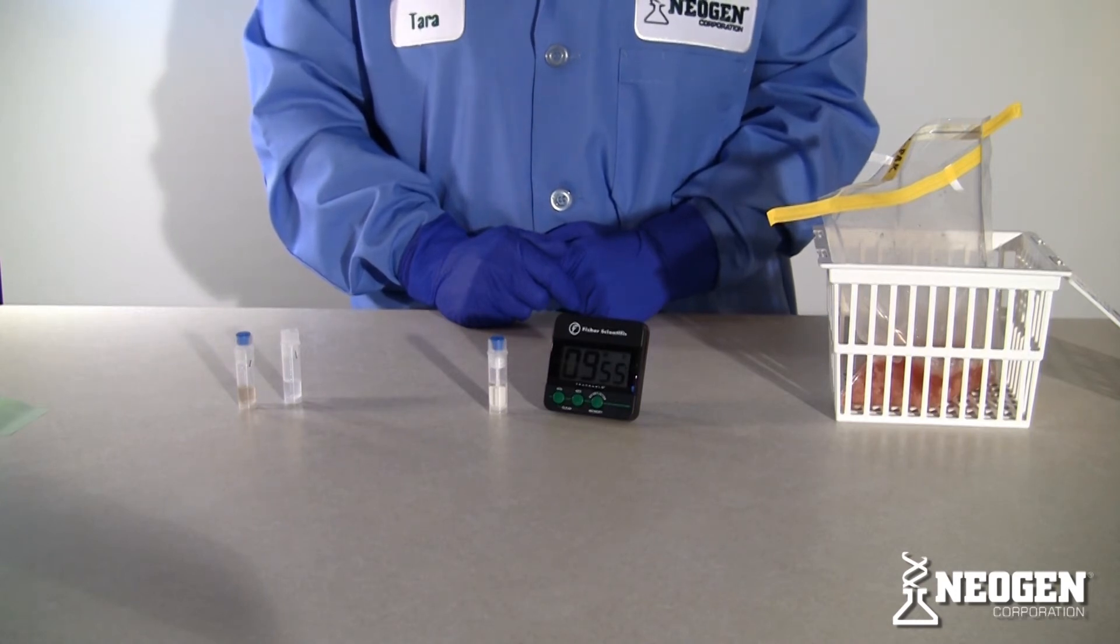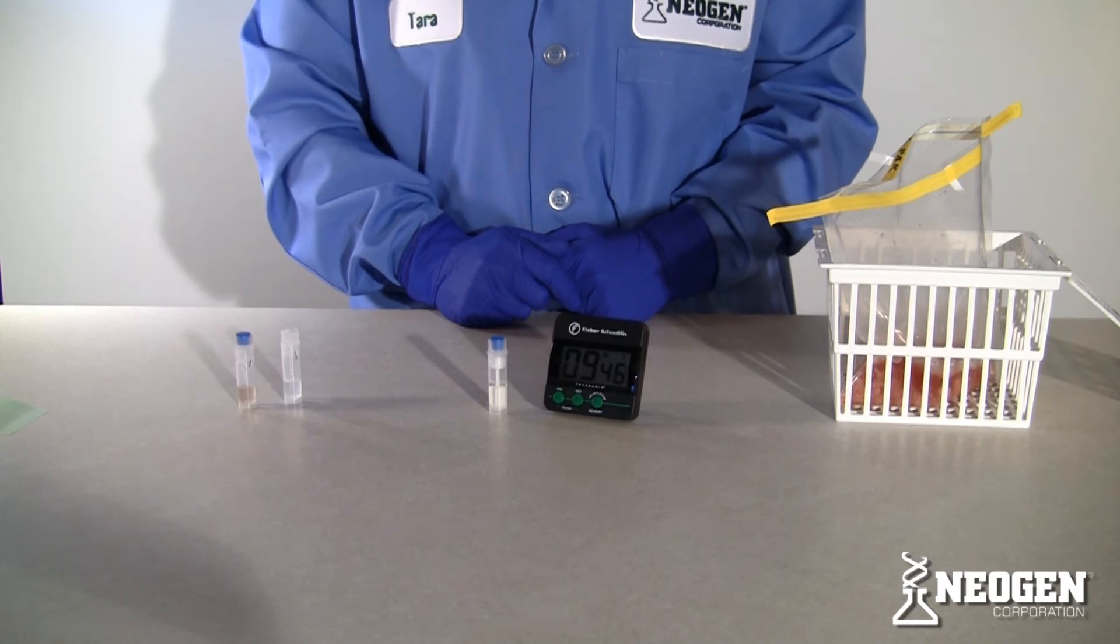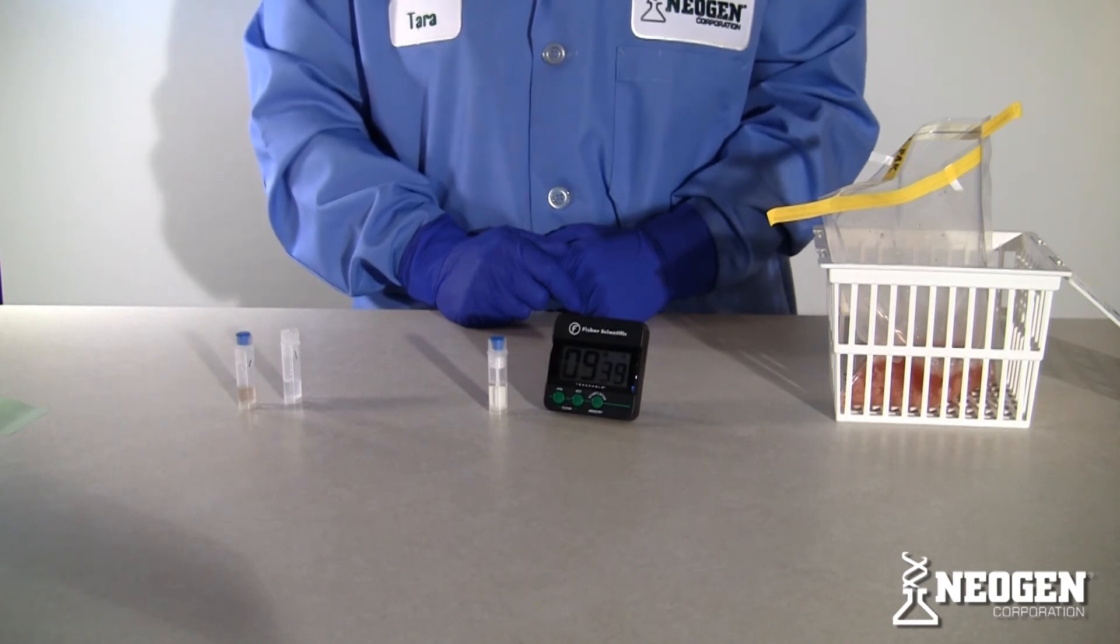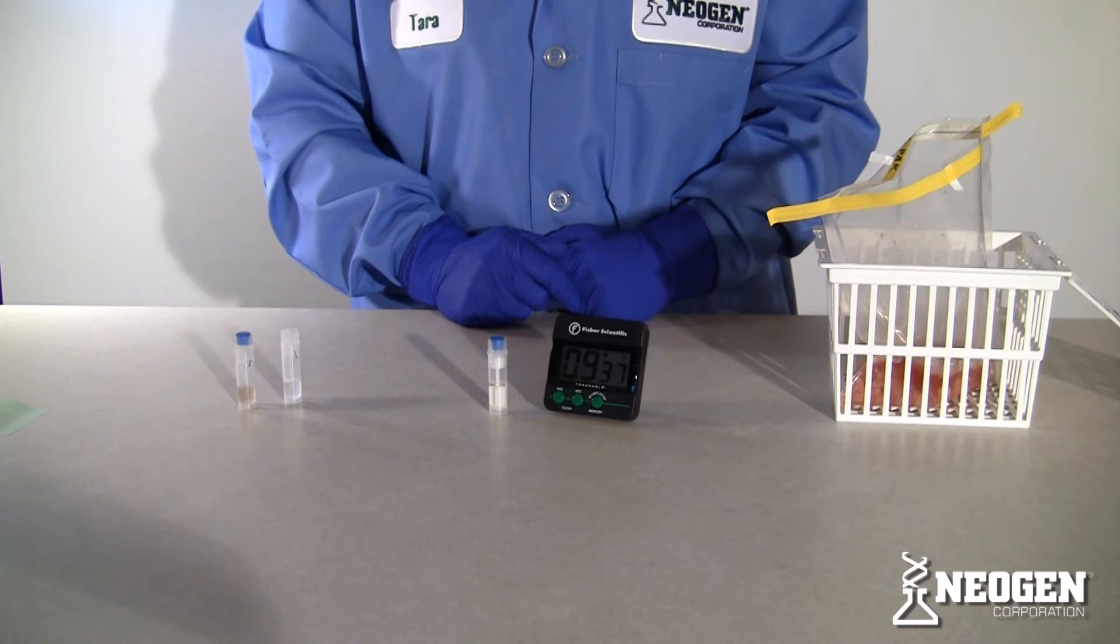Add other sample extracts to immunosticks tubes at one minute intervals and allow each to stand for ten minutes. If the same extract is to be tested for other species, repeat additions to other immunosticks tubes at one minute intervals. Discard pipette. In this presentation, we will be testing for poultry meat only.